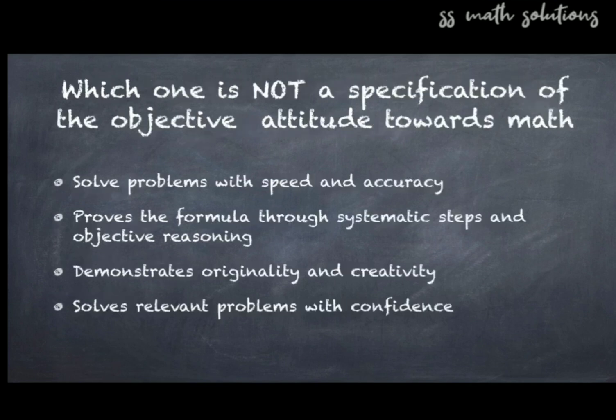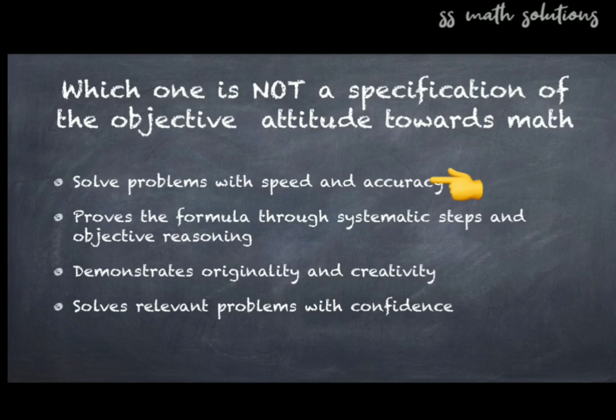Question 19: Which one is NOT a specification of the objective 'attitude towards mathematics'? Options: solve problems with speed and accuracy, proves the formula through systematic steps and objective reasoning, demonstrate originality and creativity, solves relevant problems with confidence. The answer is option one — solve problems with speed and accuracy is not a specification of the objective attitude towards mathematics.